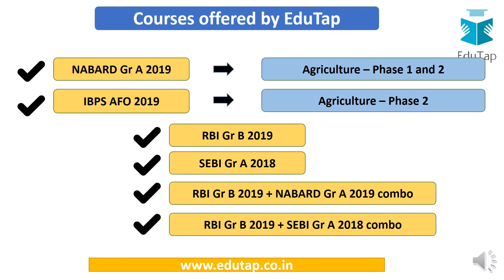Let me quickly tell you about our courses so that you can see what is important for you. First, we have NABARD Grade A for the 2019 examination. This exam has a very core component of agriculture in both Phase 1 and Phase 2, covered through our courses. We also offer a test series for IBPS AFO, where agriculture is again a core component in Phase 2. We also offer courses helpful for RBI, SEBI, and NABARD.